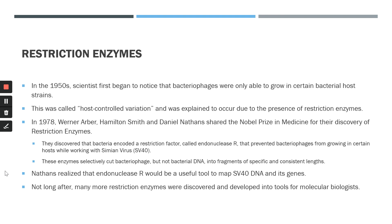When scientists discovered that the bacterial host could cleave SV40 DNA into fragments of the same specific size each time, they realized that endonuclease R would be quite useful for drawing a map of SV40 DNA and its genes. They isolated endonuclease R and used it to map the genes in SV40 DNA. Not long after, scientists discovered many more restriction enzymes, which have since been developed into very useful tools in molecular biology.